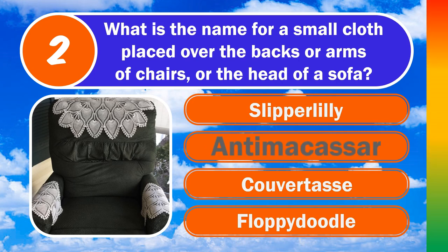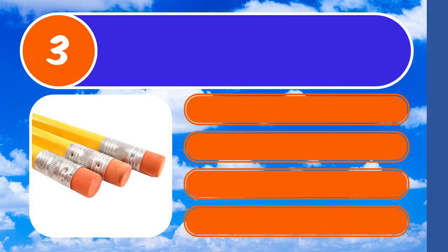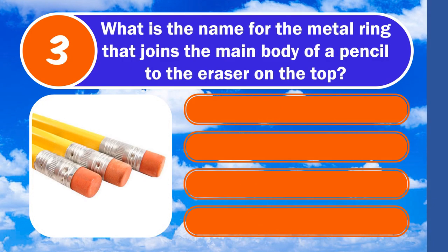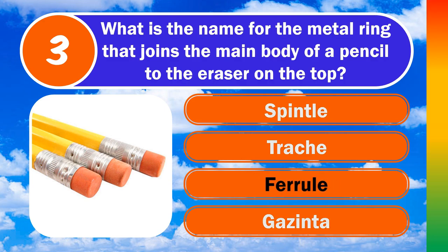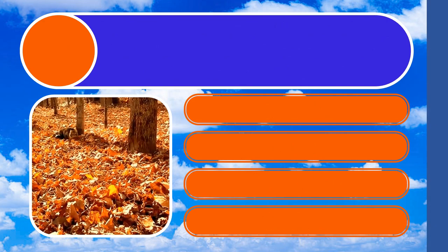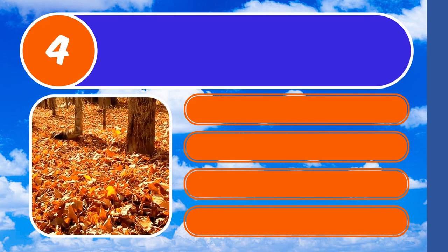Question three: what is the name for the metal ring that joins the main body of a pencil to the eraser on top? Is it Spintle, Trash, Ferrule, or Gazinta? The answer is ferrule.